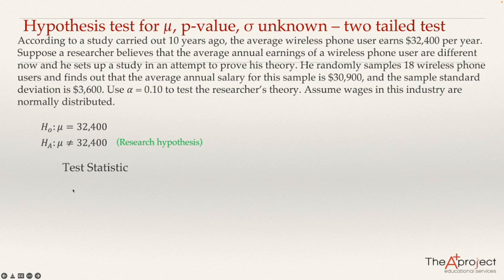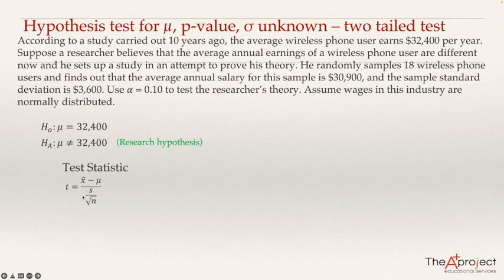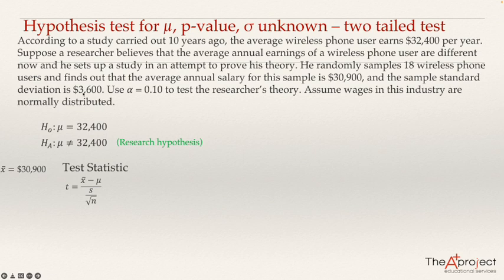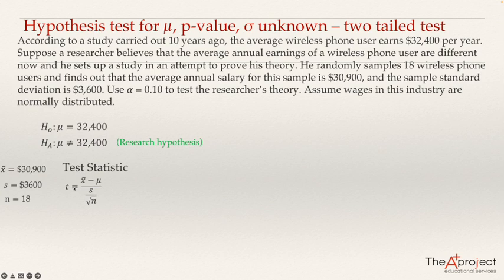Let's compute the t-test statistic. The formula is: t equals the sample mean minus the population mean, divided by the sample standard deviation over the square root of n. We have all the required data: the sample mean is $30,900, the sample standard deviation is $3,600, and the sample size n equals 18.